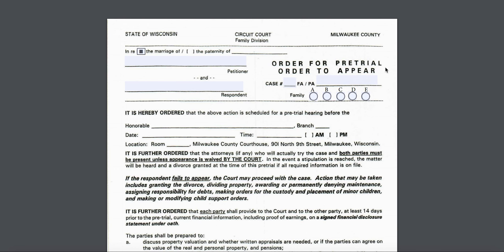If you are not located in Milwaukee County, you can contact your clerk of court to find out what resources are available in your area. The order for pretrial, order to appear, is used in Contested Part 2. So if you are not going forward separately or contested, then you don't need this document.